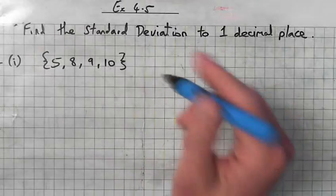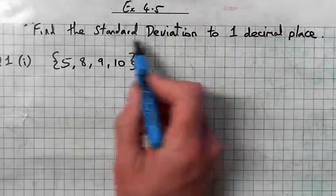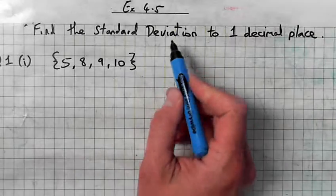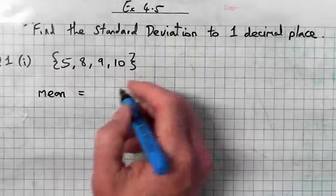Alright, next is 4.5: find the standard deviation to one decimal place. So before you can get the standard deviation, you have to get the mean of the data. So get the mean, add them all up.